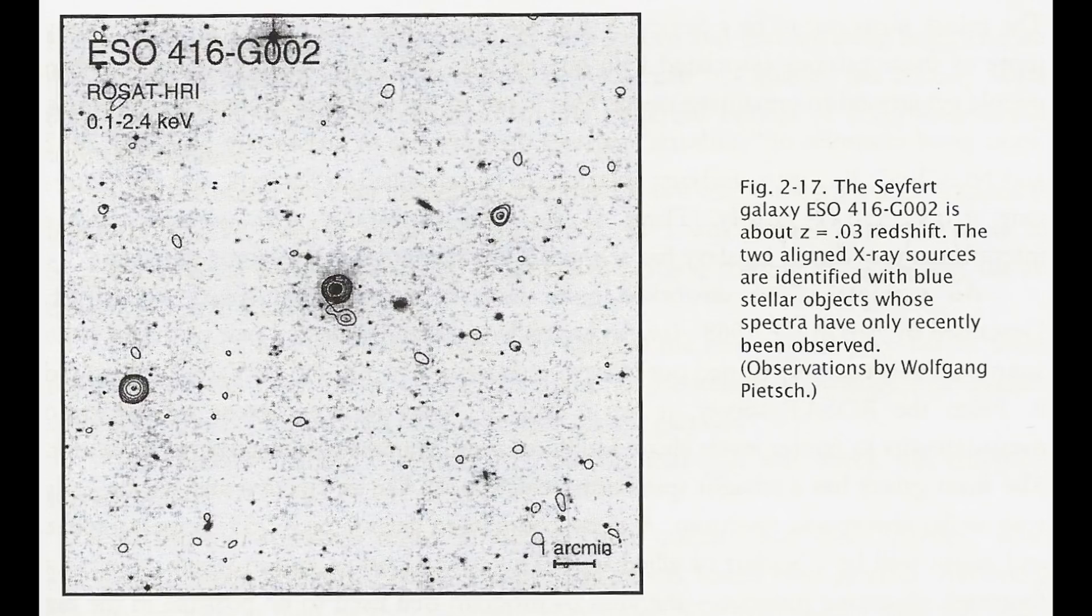ESO 416G002. Here is another example of a Seyfert galaxy with three strong X-ray sources located across this galaxy. One is a quasar and one is a BL-LAC object.